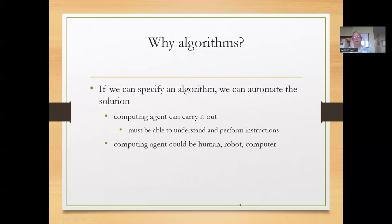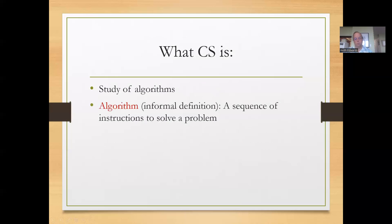And the computing agent could be human. It could be a kid, brother or sister, a niece or nephew, a robot, or it could be a computer itself.